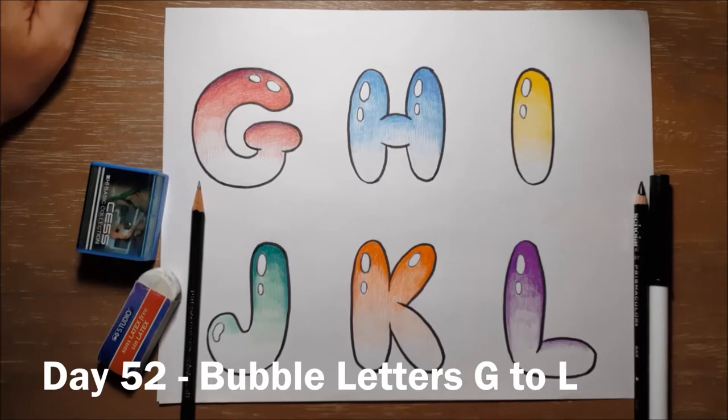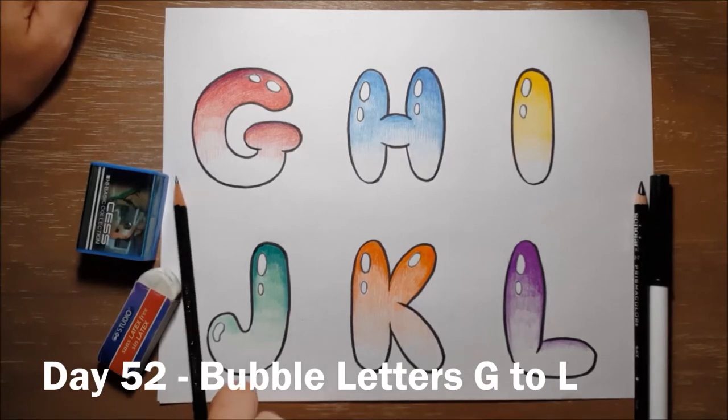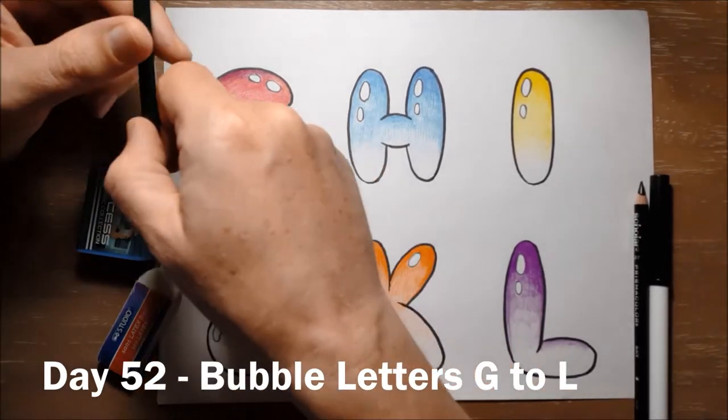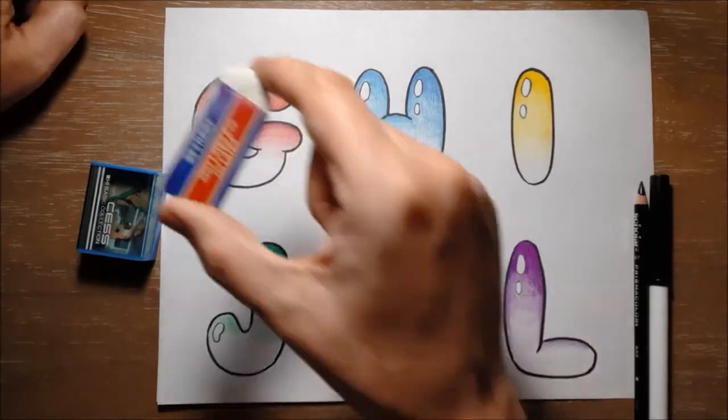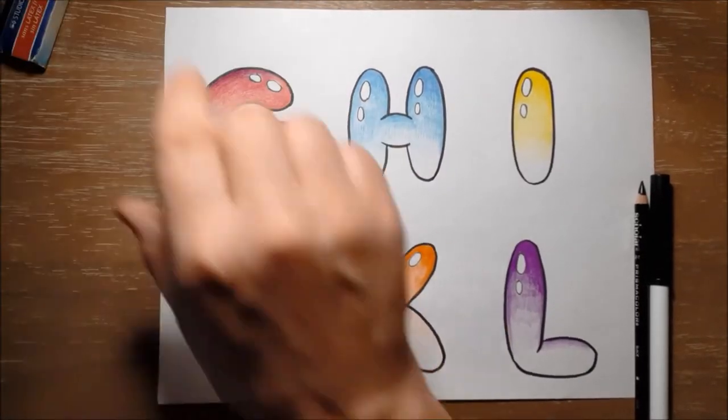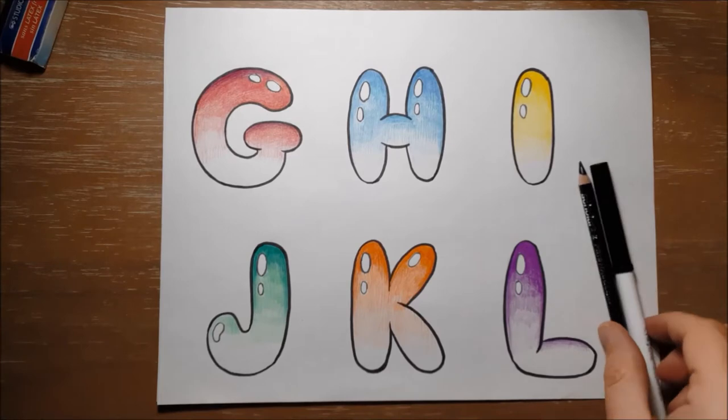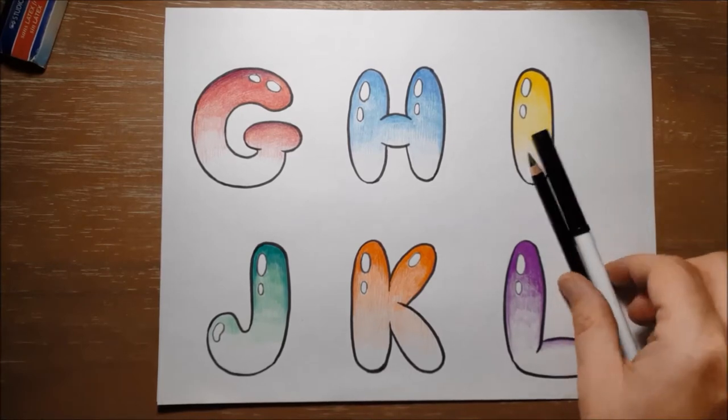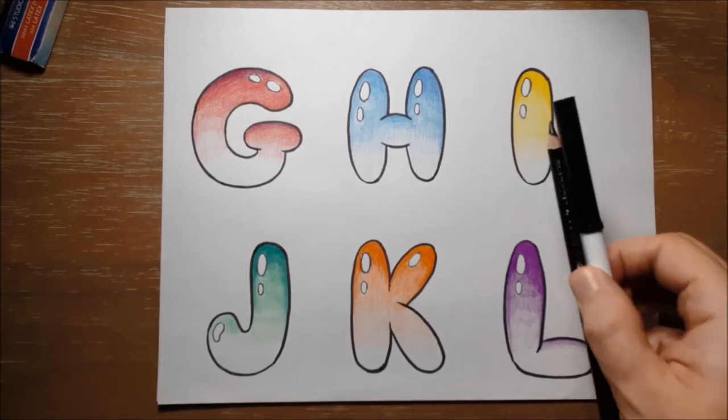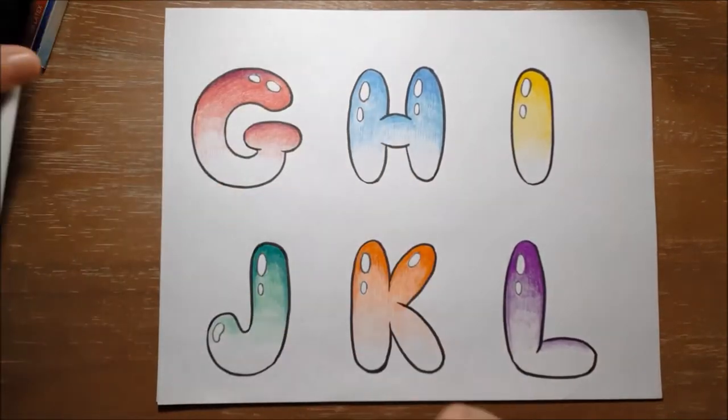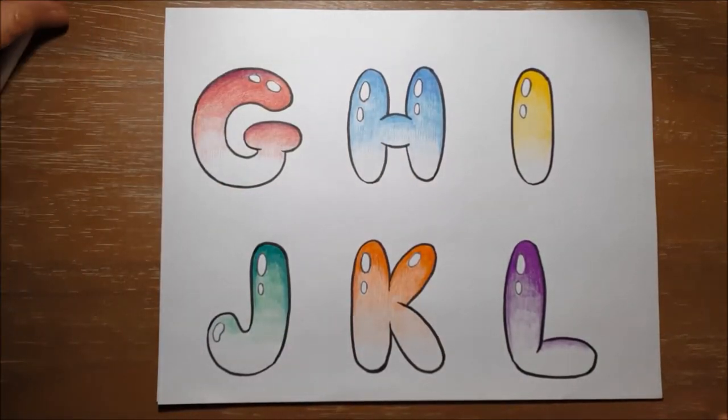Here are our next set of bubble letters. To make them you will need a pencil and maybe an eraser to erase any mistakes, a pencil sharpener, a black pencil crayon or marker to outline with, and some colored pencils or markers to color them at the end. I'm going to use this grey marker just so you can see what I'm doing.